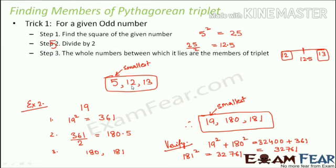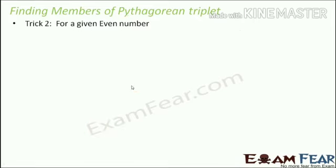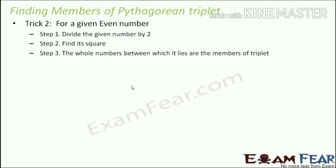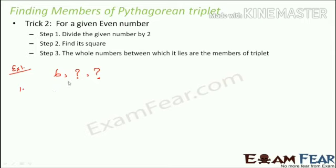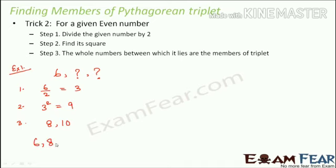Now let's look at Trick 2, which is for even numbers. It is also a three-step trick but the steps are slightly different. Let's use the example of 6. Step one: divide the given number by 2. So 6 ÷ 2 = 3. Step two: find its square. So 3² = 9. Step three: find the whole numbers on either side of 9, which are 8 and 10. Therefore, 6, 8, and 10 form a Pythagorean triplet.